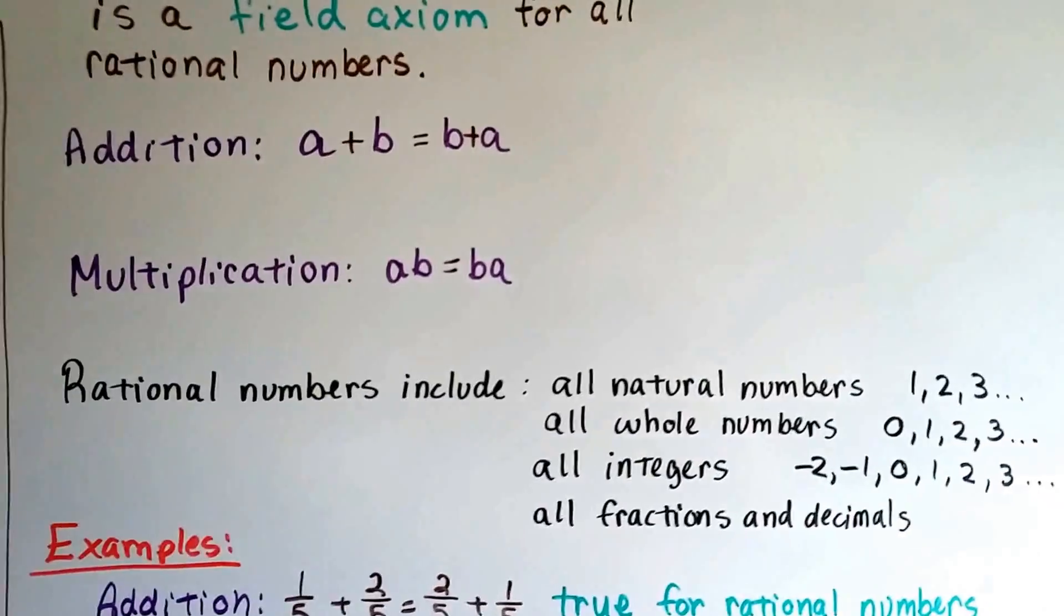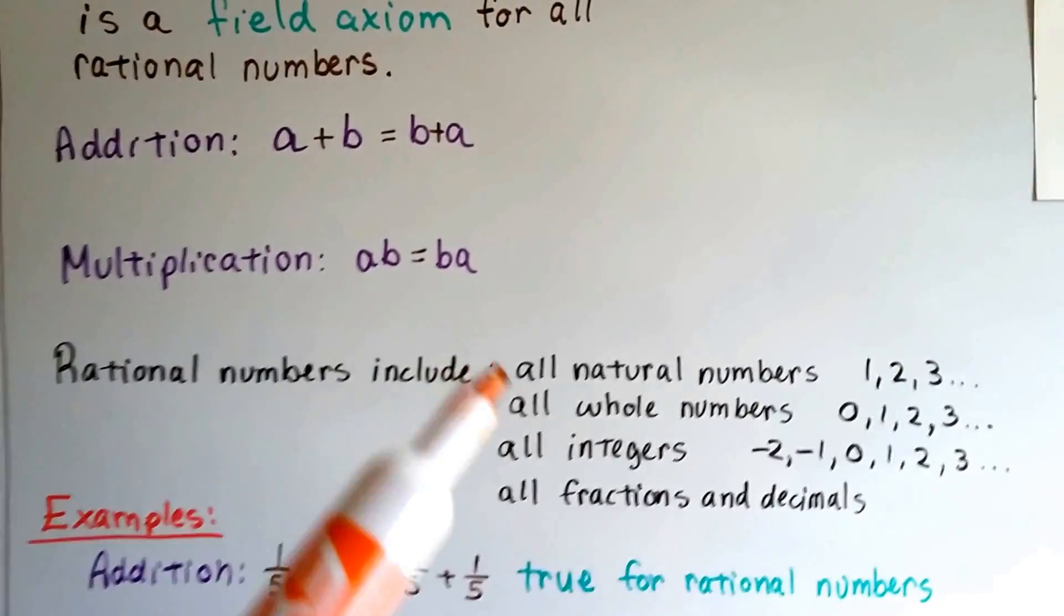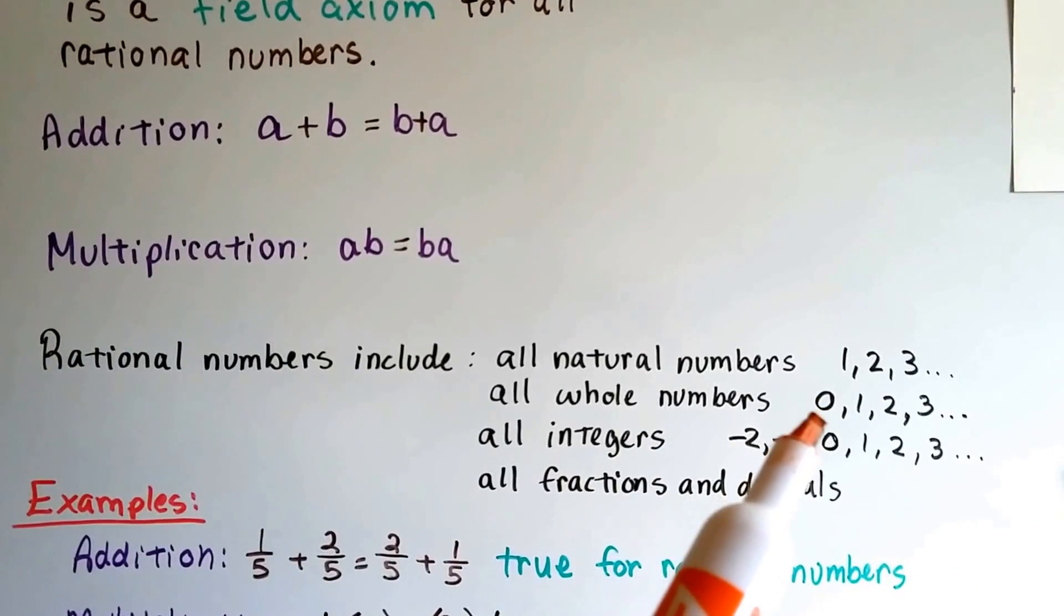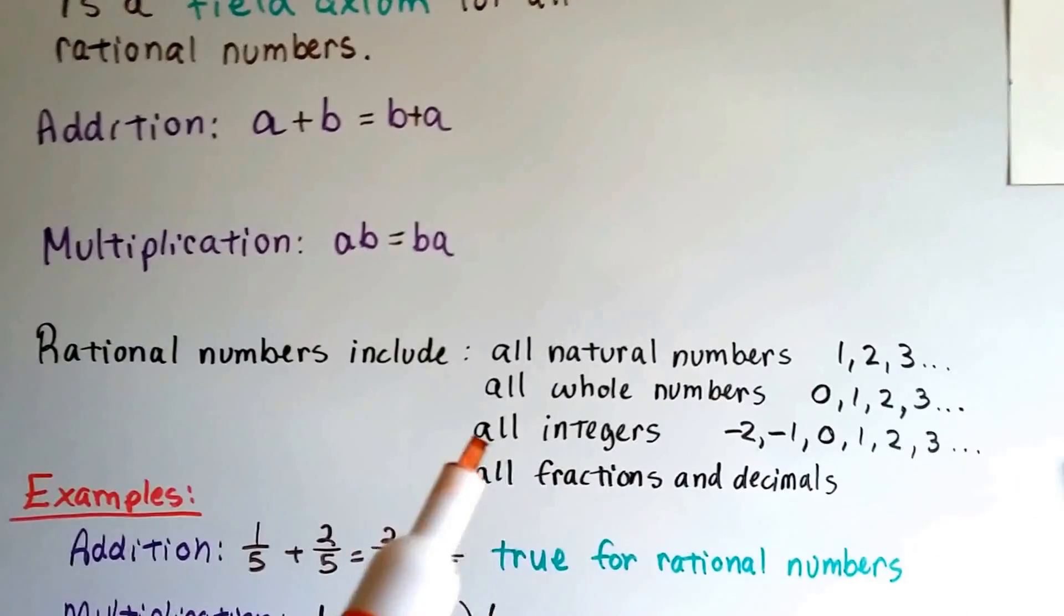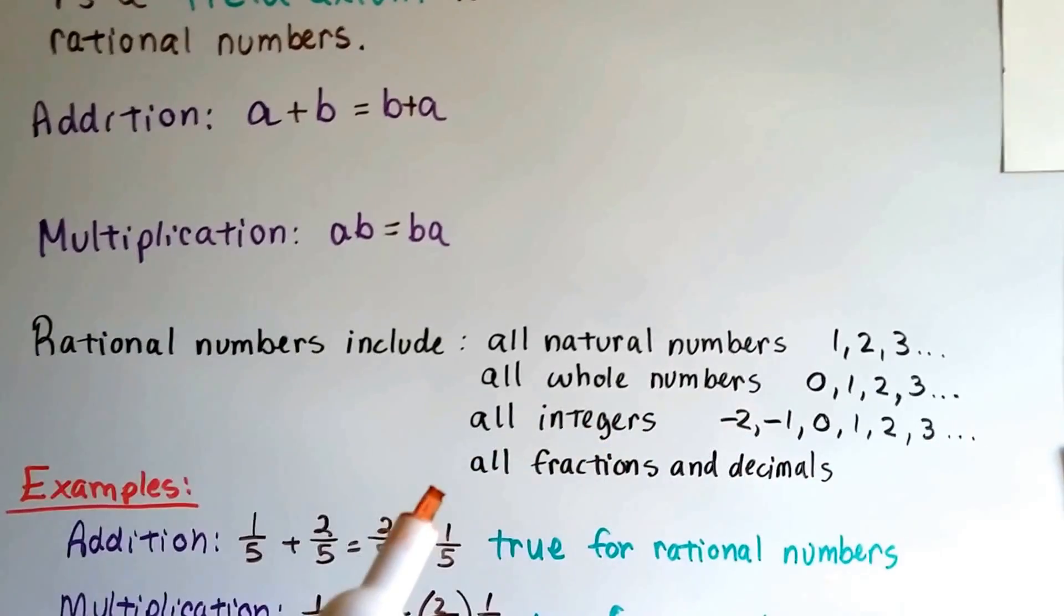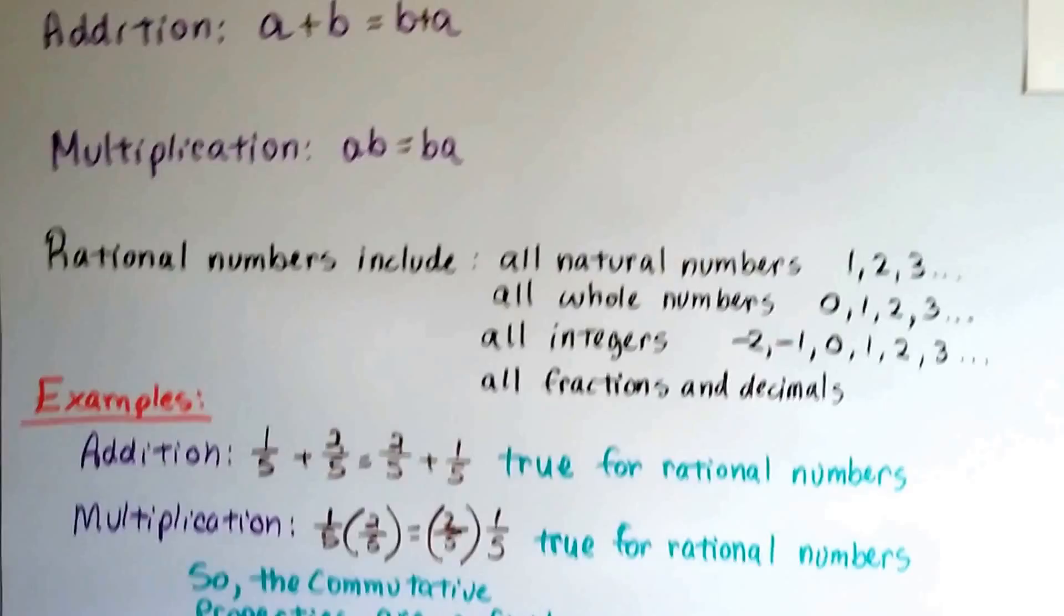Well, the rational numbers include all the natural numbers, which are like one, two, three, et cetera. All the whole numbers, well, that's natural numbers with zero. All integers, that's negative and positive numbers. And rational numbers include all the fractions and decimals.